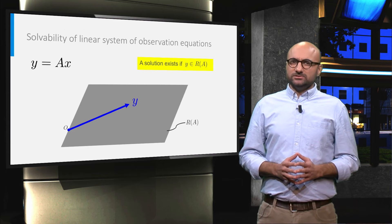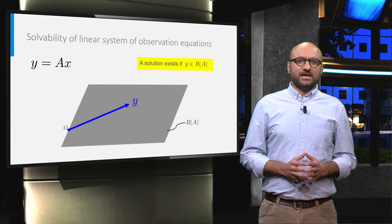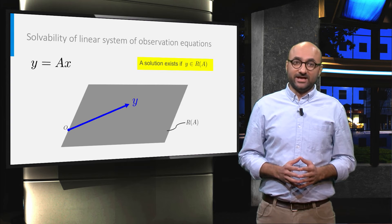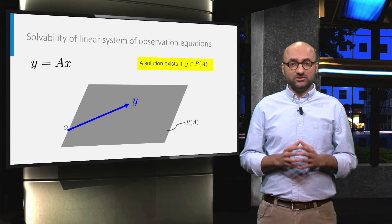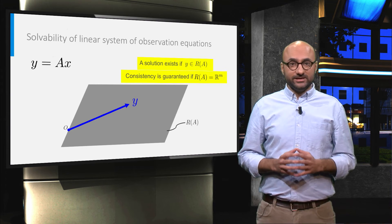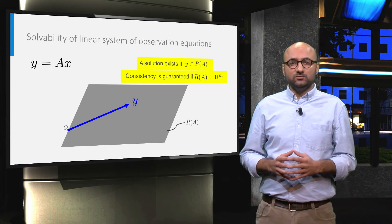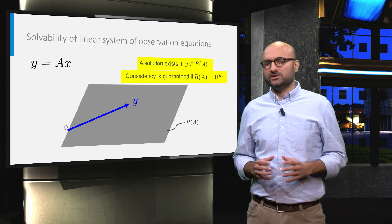Note that because the vector of observations is m-dimensional, as we have m observations, we can say that the consistency is guaranteed if the range space of A is equal to the entire m-dimensional space.